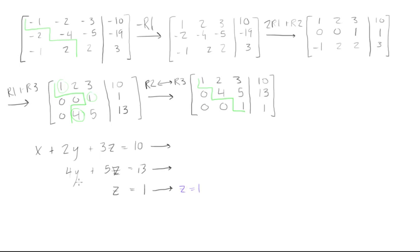Now if we plug in this 1 into the next equation, we're going to have 4y plus 5 times 1 is equal to 13. And this will give us, when we reduce further, we'll have 4y is equal to 8. And that will give us y is equal to 2.